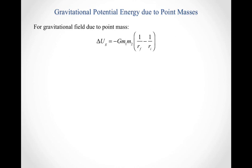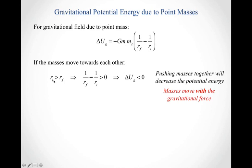Let's verify this equation is consistent with what we knew conceptually about whether gravitational potential energy increases or decreases based on moving with or against the gravitational force. If our masses move towards each other, the initial distance is greater than the final distance. Then 1 over something smaller minus 1 over something bigger means the expression in parentheses is positive. Times positive G, positive mass 1, positive mass 2 — nothing cancels that minus sign, so the gravitational potential energy is decreasing.